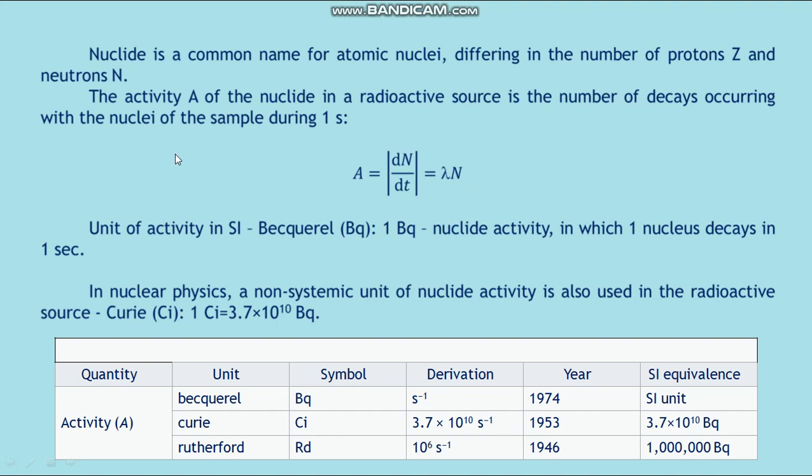Unit of activity in SI system: Becquerel (Bq), one Becquerel equals nuclide activity in which 1 nucleus decays in 1 second. In nuclear physics, a non-systematic unit of nuclide activity is also used in the radioactive source: Curie (Ci) = 3.7 × 10¹⁰ Bq. Also used is 1 Rutherford (Rd) = 1 million Becquerel.